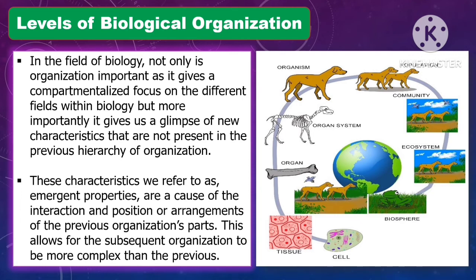In the field of biology, organization is important as it gives a compartmentalized focus on different fields within biology. More importantly, it gives us a glimpse of new characteristics not present in the previous hierarchy of organization. These are referred to as emergent properties, which arise from the interaction and arrangement of a previous organization's parts, allowing subsequent levels to be more complex than the previous.